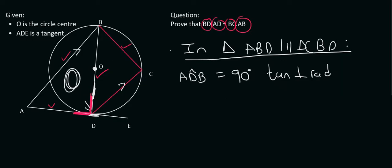Then in this pink triangle, we could also say that this angle is 90 degrees. Why? Because of angles in a semicircle, because this is the diameter. BD is the diameter. So we can say that angle C is 90, because of angles in a semicircle.